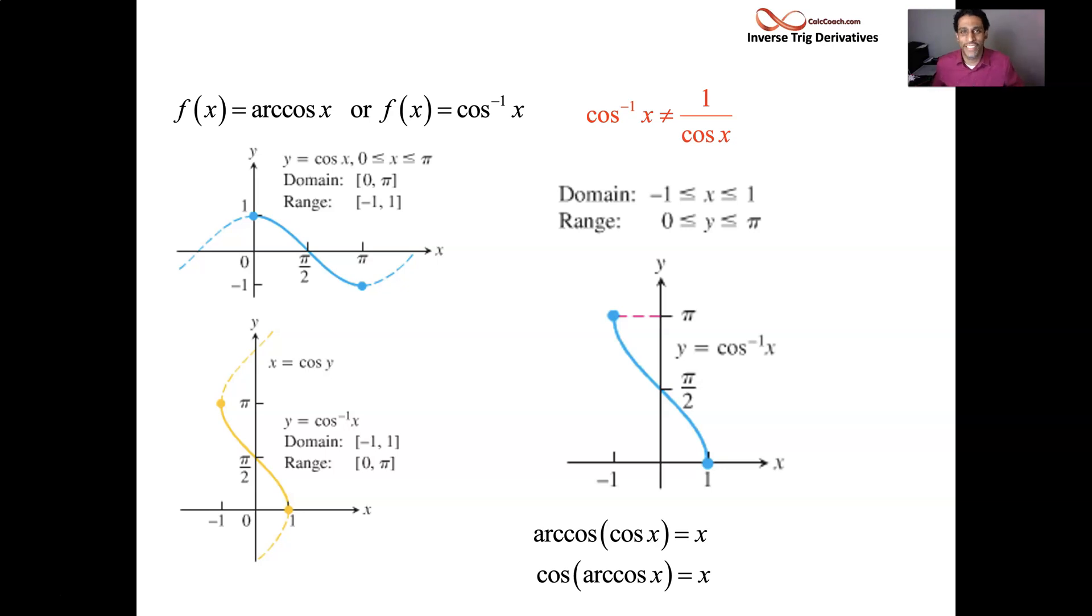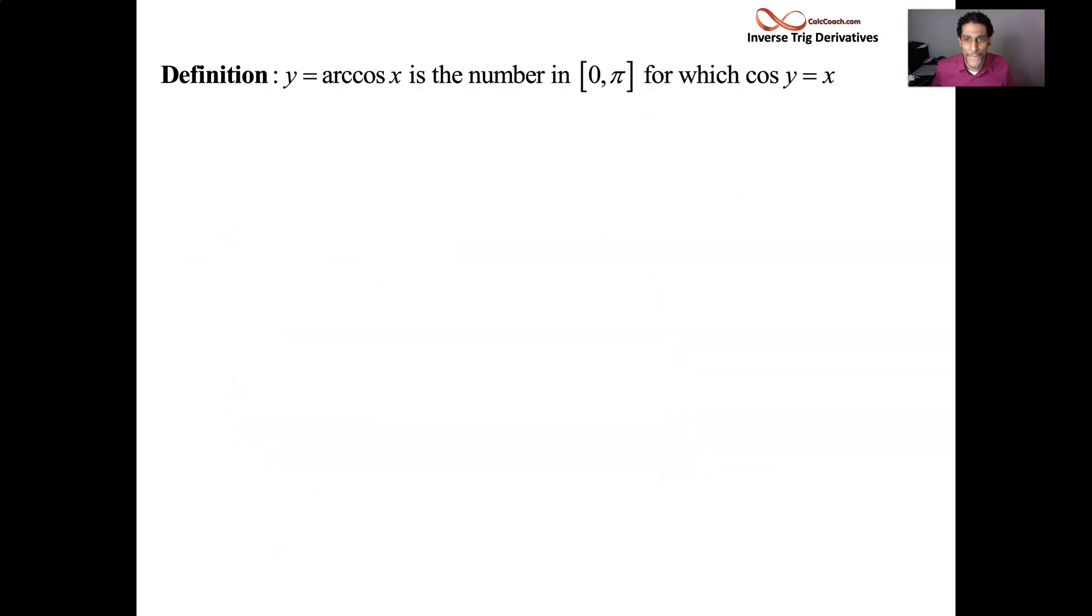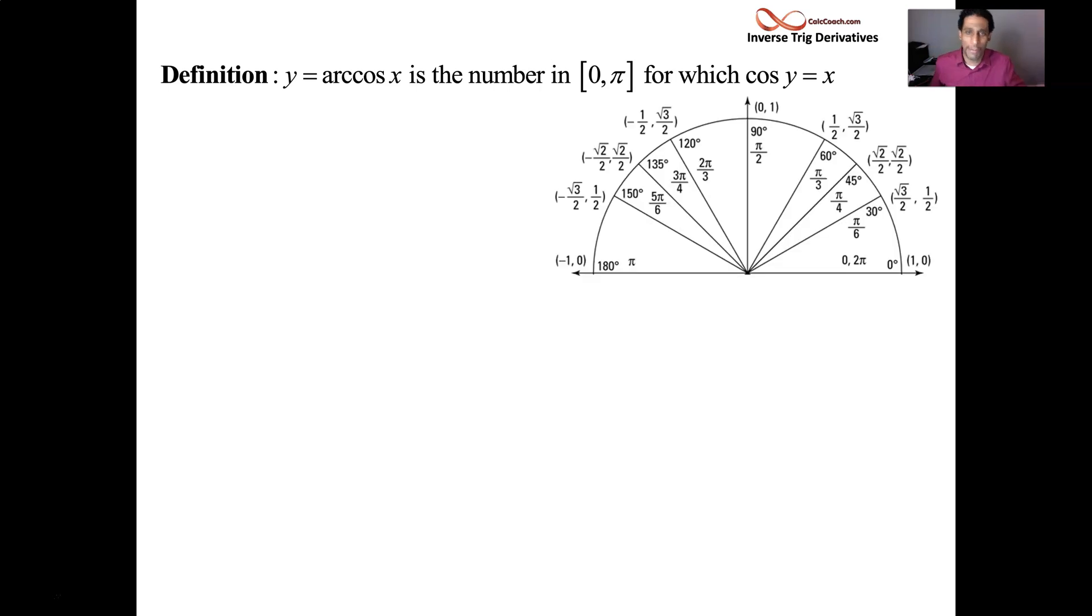And so let's look at trying to evaluate this function at three different input values. So we should only look at the upper part of the unit circle because we're only using angles at between 0 and pi. We should be focusing in on the x values because those are the cosine values. And so if somebody asks you to find the arc cosine of negative 1 half, you're going to scan the top half of the unit circle to find the x value being equal to negative 1 half.